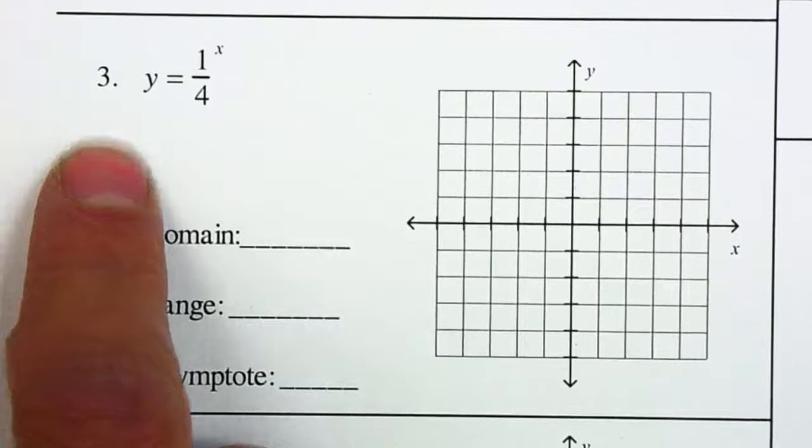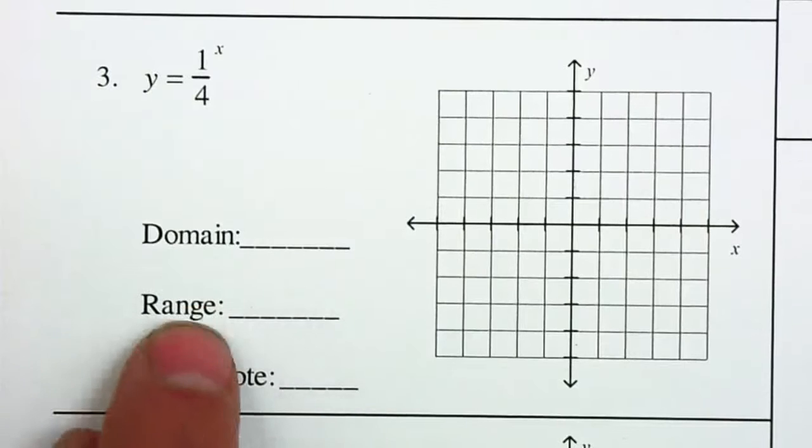Sketch the following graph and state the components. We need to state the domain, the range, and the asymptote.